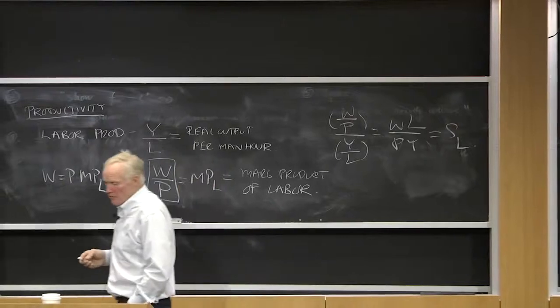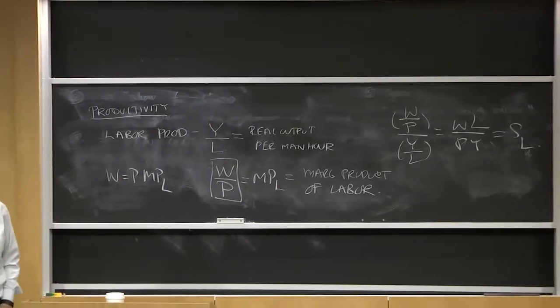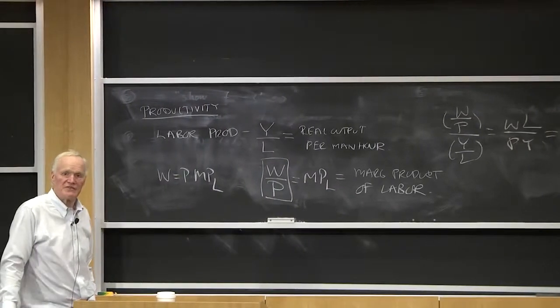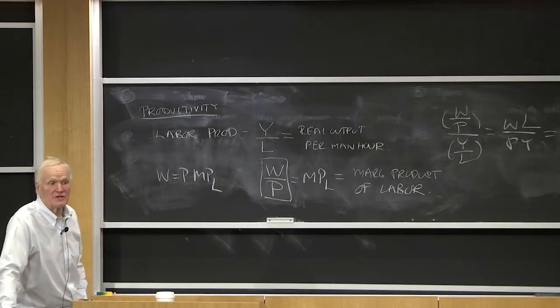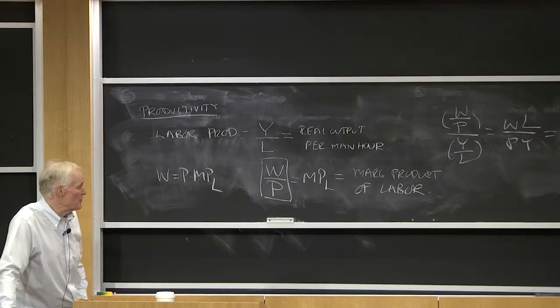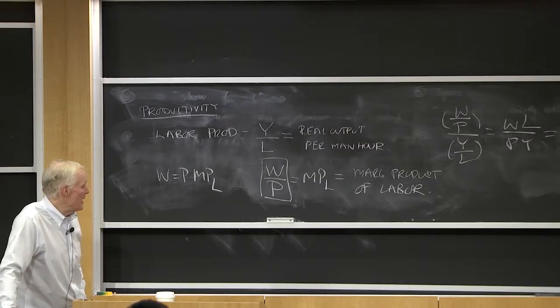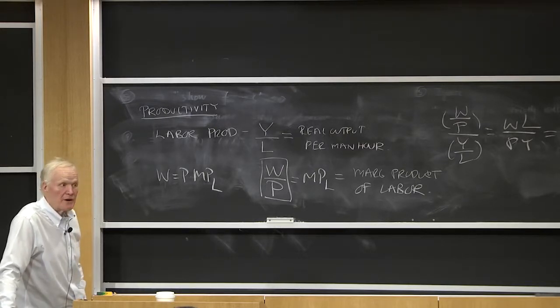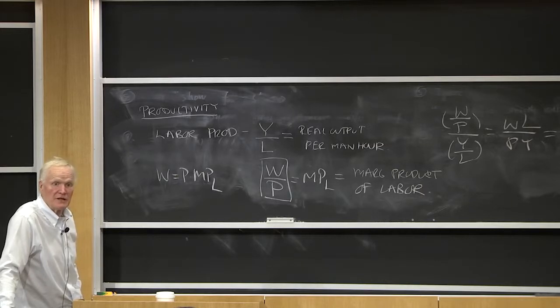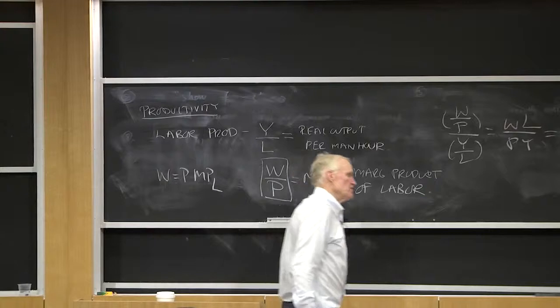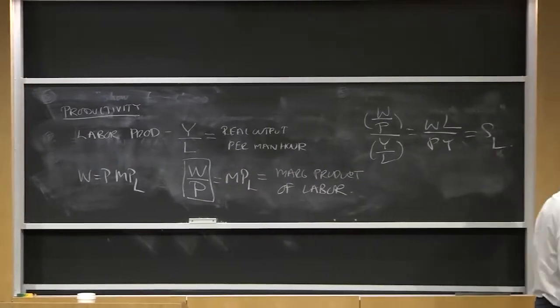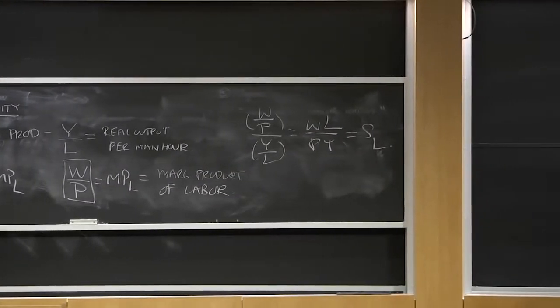Both these measures of productivity growth kind of gave us the same message. And if you looked over a long time, we got significantly richer as measured by labor productivity. Both output per man-hour and the real wage rate were increasing substantially. That's part of that long-run growth process that people tried to model with the neoclassical growth model.